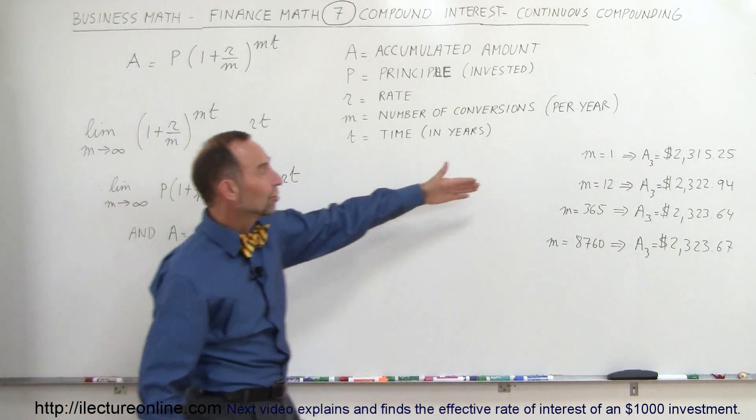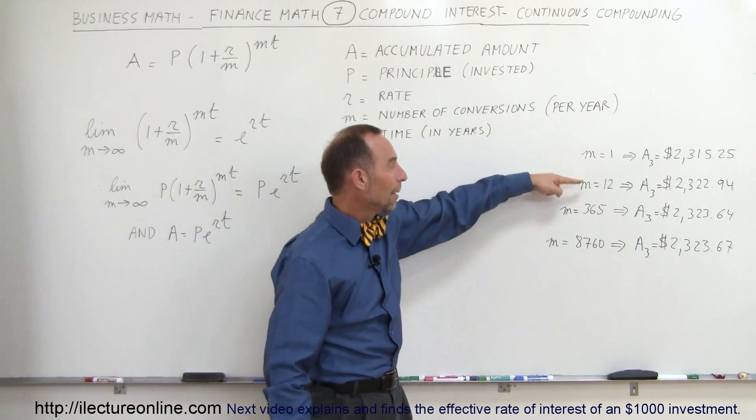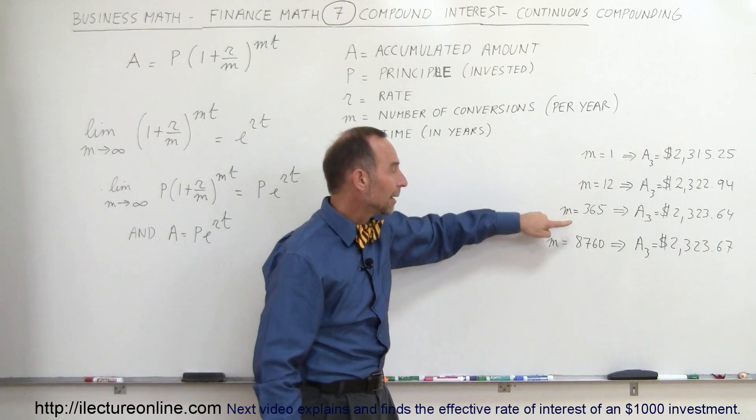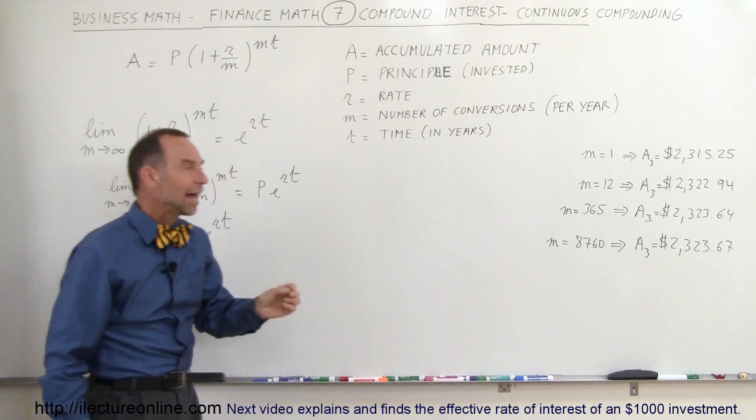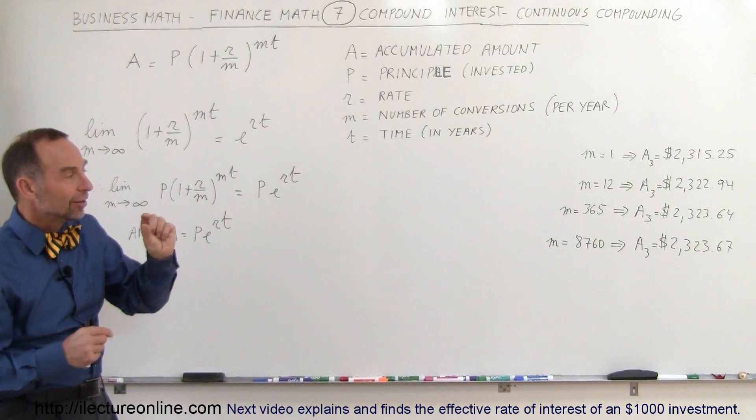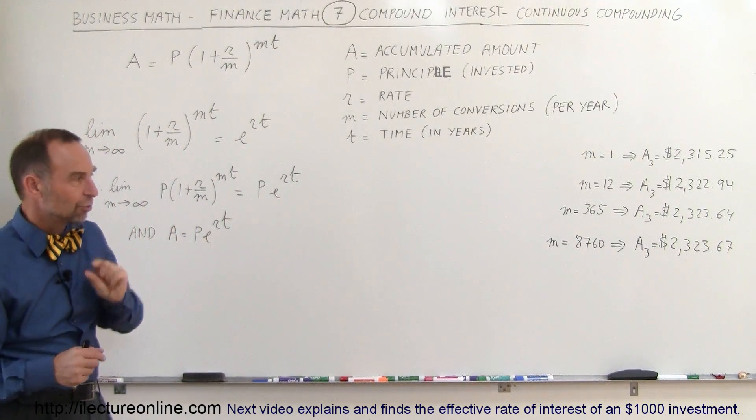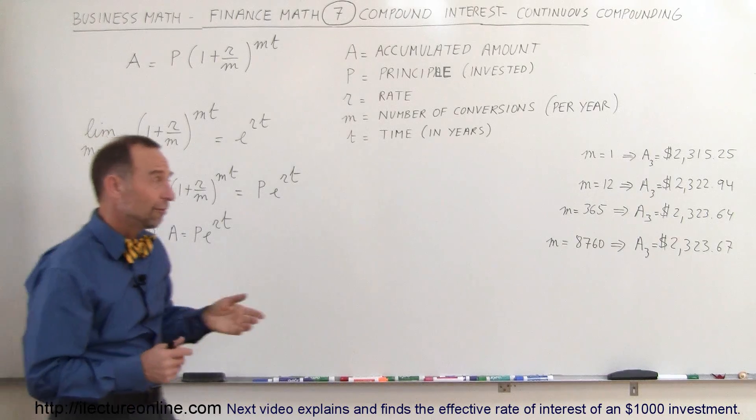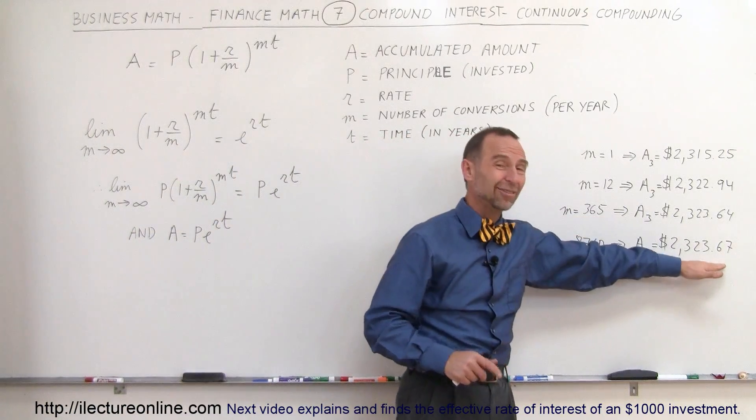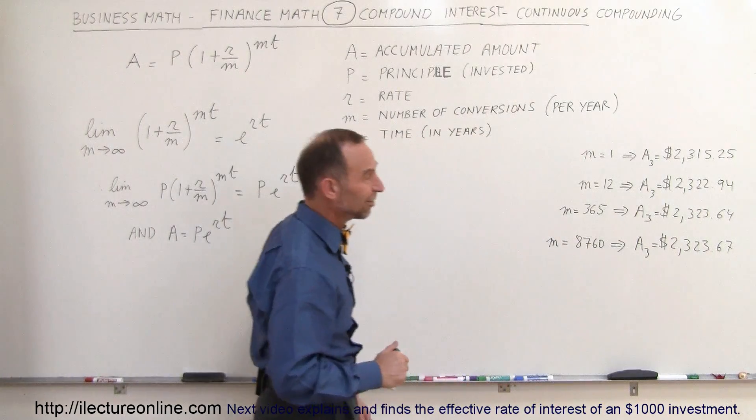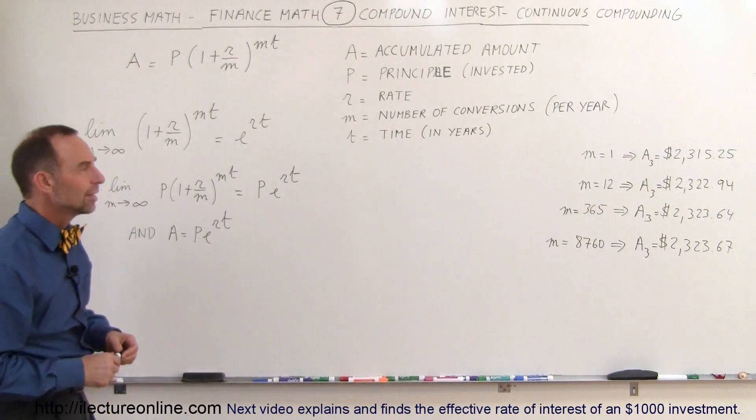In previous videos, we saw that for yearly compounding, monthly compounding, daily compounding, and hourly compounding, we would have accumulated amounts like that. And you can see that as the number of compounds increase, the benefit gain becomes smaller and smaller. So the difference between compounding daily and compounding hourly is only 3 cents on a $2,000 investment at 5%, not really worth the effort.